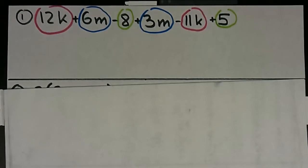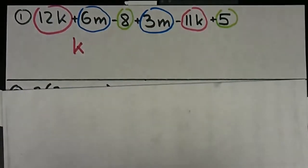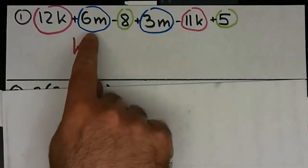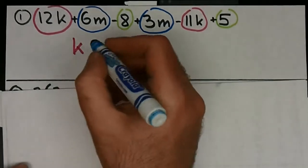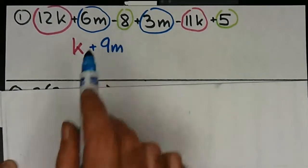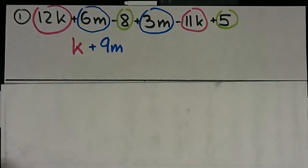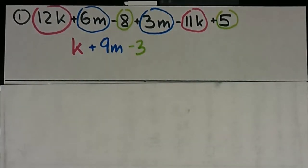Now you just combine what's similar to get an answer. 12k minus 11k is just a k — 1k, or just k, doesn't matter. The m's: 6m plus 3m gives us a 9m, so it's a positive 9m. Then the constants: we have negative 8. Don't forget the sign belongs to the term in front of it — so negative 8 plus 5 gives us negative 3, or minus 3. That's the answer. Questions on one?